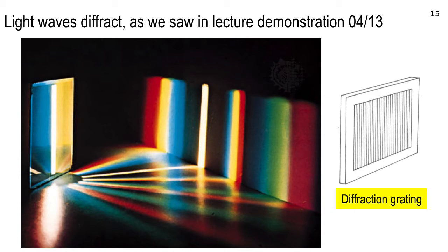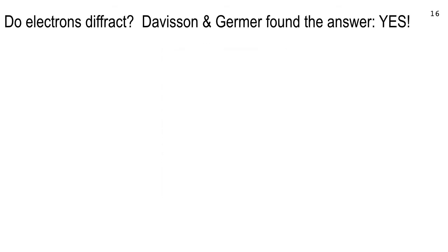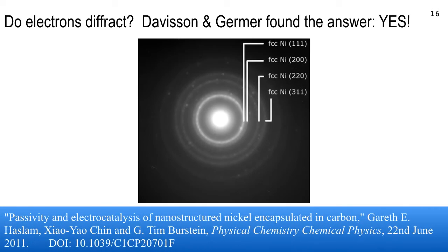In 1927, Davison and Germer — two Americans — observed electron diffraction. Here's the modern version of what it looks like: a beam of electrons going through a very thin set of nickel crystals at various orientations. Where the image is bright, many electrons are hitting the detector. This is like a cathode ray image — go look it up on YouTube.